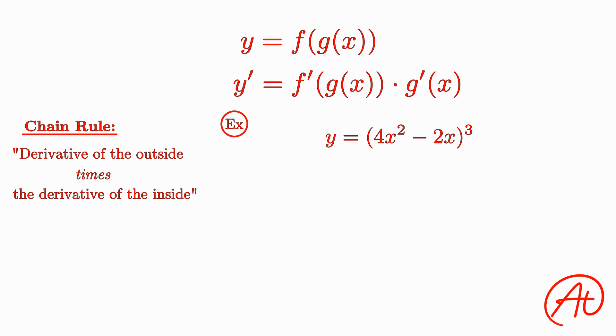First, let's write out what the layers of this equation are. In this case, our outermost function is the cubic, which I like to literally write as something cubed, so as not to forget to leave whatever is inside alone when taking the derivative. Then our inner function is 4x squared minus 2x.